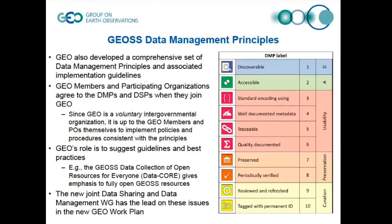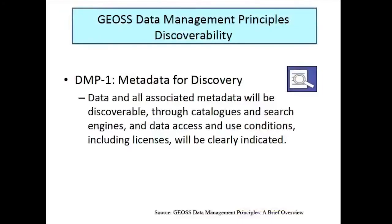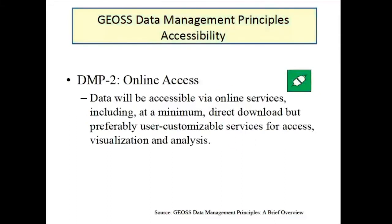Very quickly: discoverability is obviously a key issue and metadata is essential to that. One issue is that if there are data rights issues or licenses, that should be indicated in the discovery metadata. Online access is kind of a no-brainer, but encouraging not just download but increased use of services is important. Using open standards — note that OGC is one of the co-organizers of this and has been very supportive of these types of approaches.